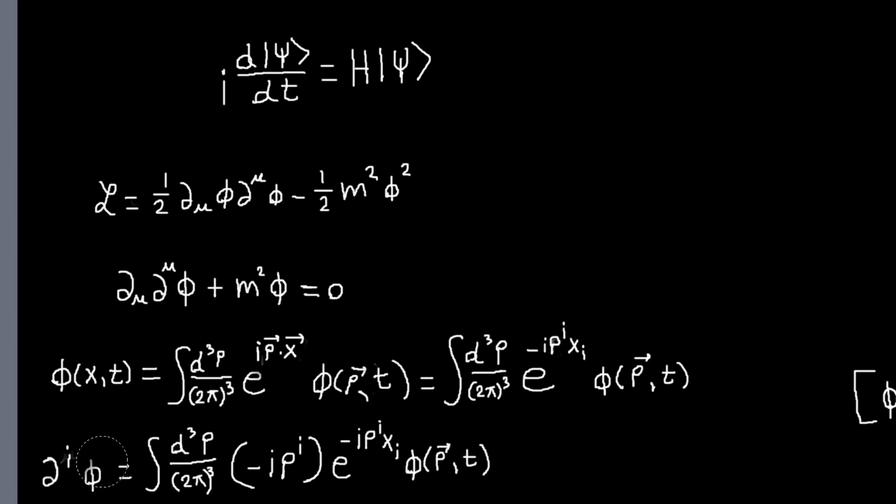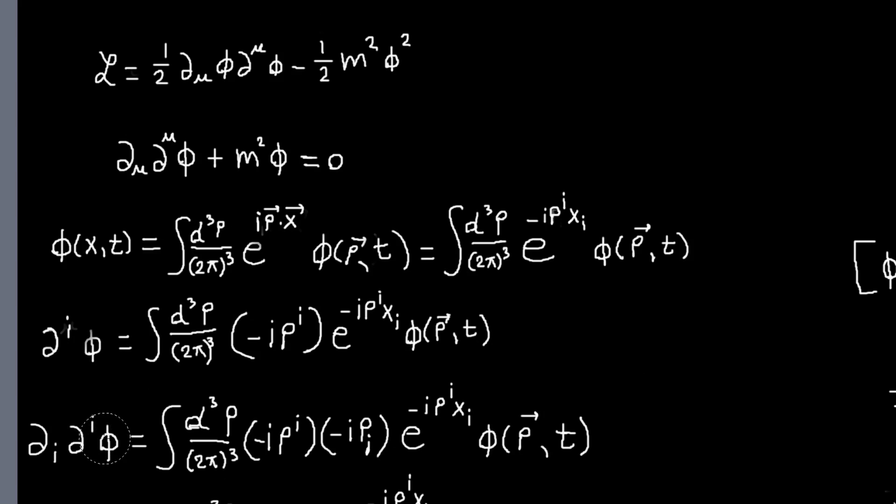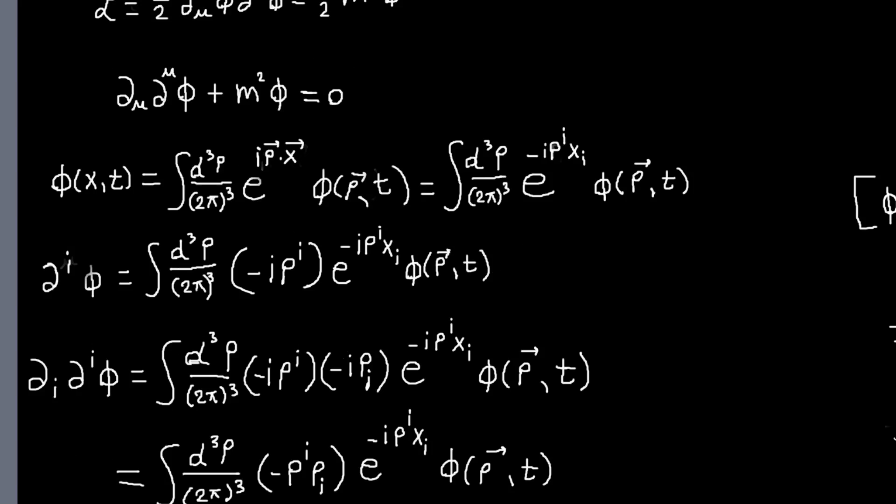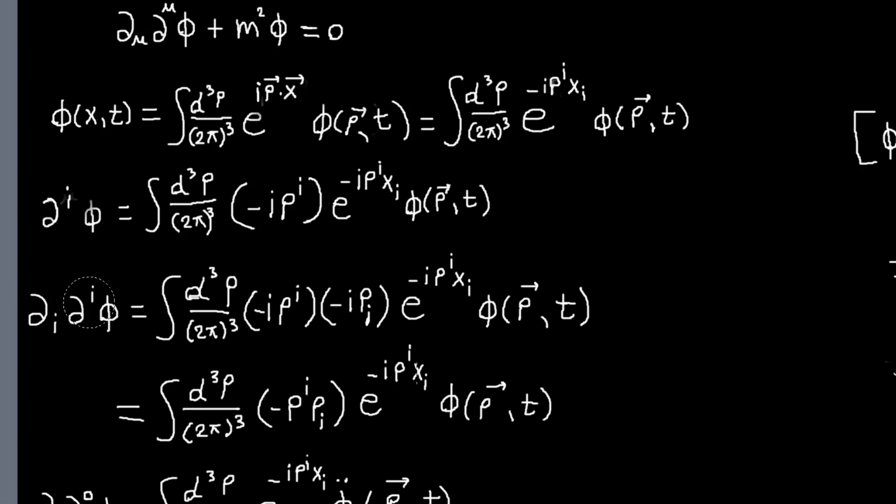First we calculate d i phi. That can easily be seen to just be, we'll get a minus i pi from up here, and then the exponential term is still there. Everything else is the same. Then d i d i phi will be this, so this time we'll get a minus i pi with the i lower. We'll combine these two and have an expression for d i d i phi.